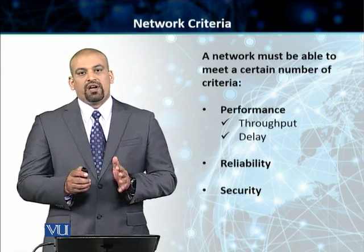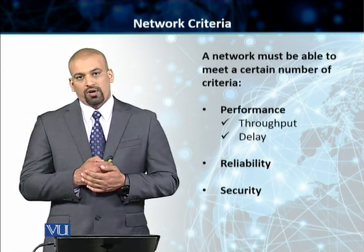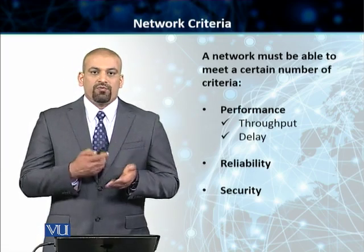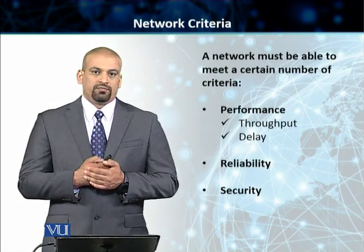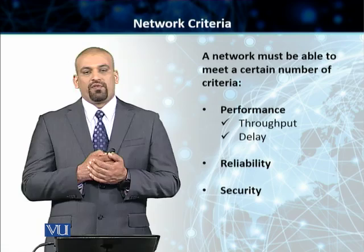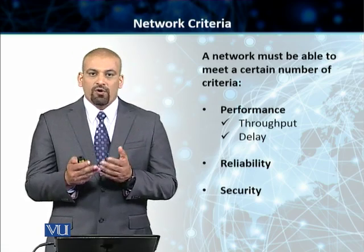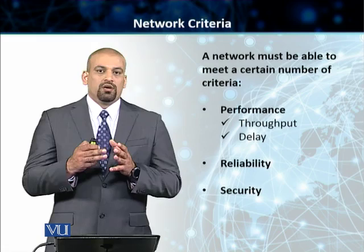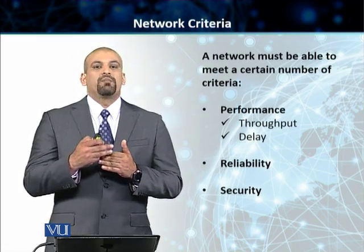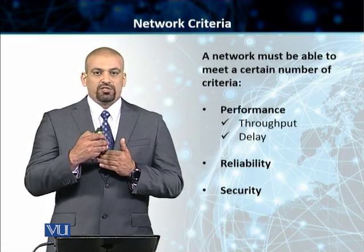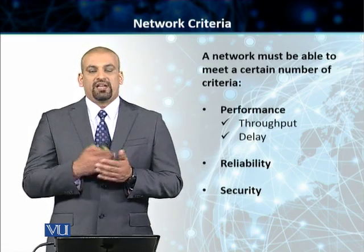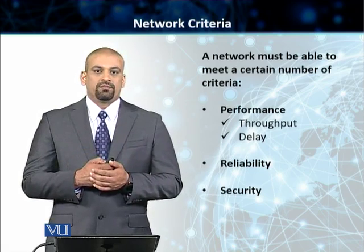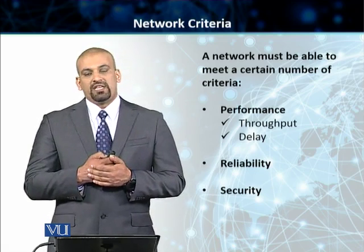On a very basic level, there are three network criteria we are going to talk about. The first one is performance — how the network is performing decides how efficient a network is. In a network, the transit time — the time it takes for a message to get from point A to point B — represents the performance of the network. The response time also decides what the performance is like.